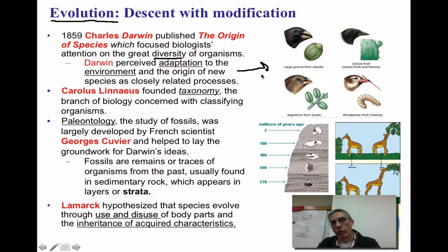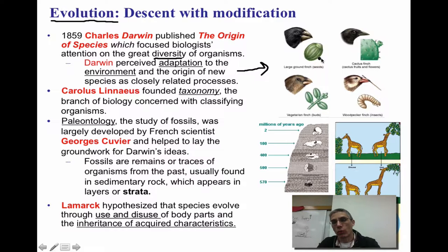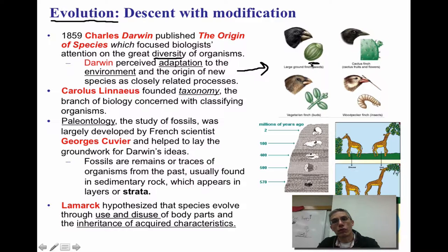Over here on the right you have four different types of finches. Darwin is really famous for looking at the various types of finches found on the Galapagos Islands. He noted that all of the finches were actually descendants of the same common ground finch, but they had changed over a period of time based on the food they consumed and the area they lived in on those islands.